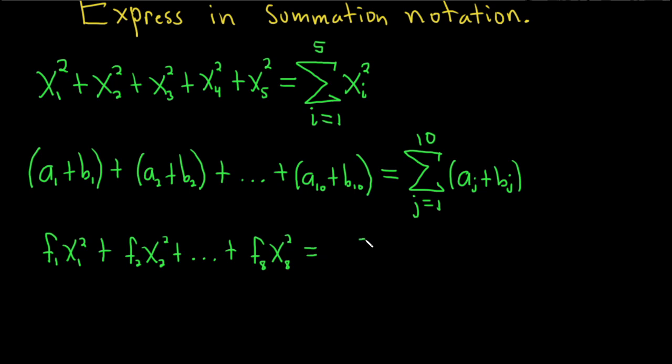So in this case, same thing. We write down our sum. And let's use a different letter this time just for fun. Let's use k. So k starts at 1 again, so we'll start at 1. And we're going to go all the way to 8, because 8's the last number there. And this will be f_k x_k².